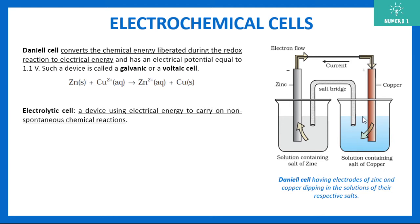Daniell's cell converts chemical energy, liberated during a redox reaction — involving simultaneous reduction and oxidation — into electrical energy. It has an electrical potential of 1.1 volts. What is happening here is that zinc is getting converted into Zn²⁺, whereas copper aqueous is getting converted into copper solid.